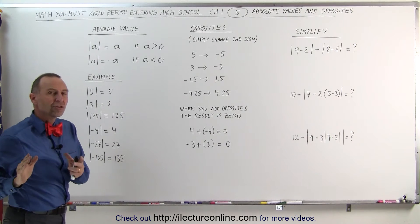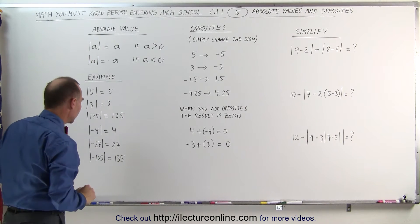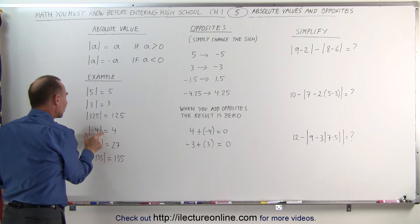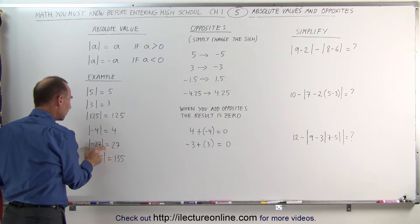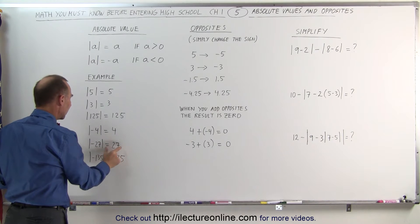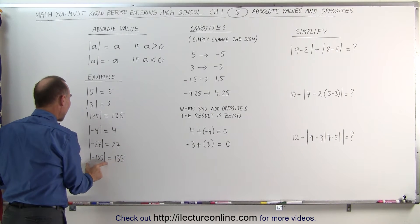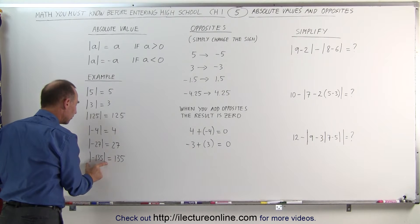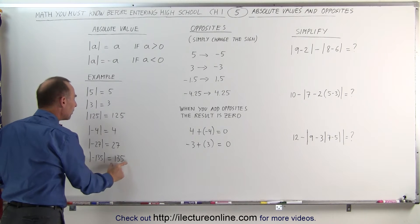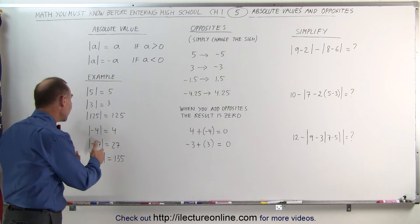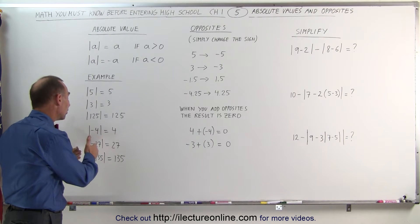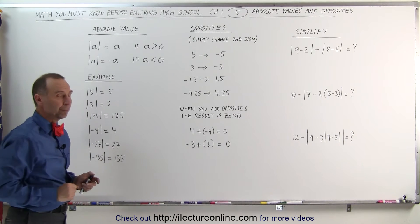It's easier to see it in examples. If you take the absolute value of negative 4, you get positive 4. If you take the absolute value of negative 27, you get positive 27. And if you take the absolute value of negative 135, you get positive 135. The absolute value symbol simply takes a negative number and turns it into a positive number.